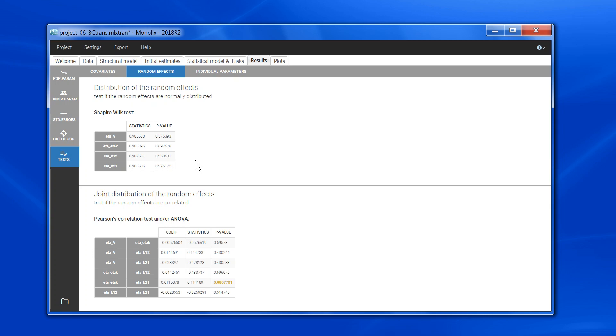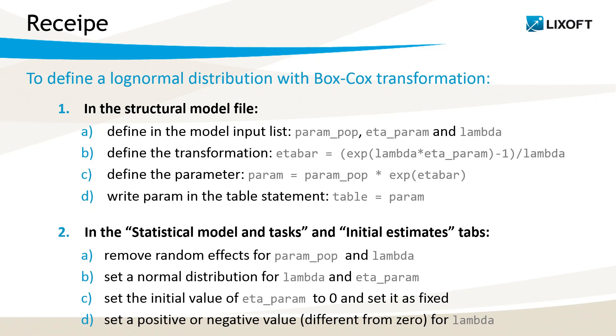So that's an example of how to implement a custom parameter distribution, by separating the fixed effect from the random effect. This separation makes Monolix a bit less efficient, in terms of speed and convergence, so do it only if necessary, and choose the initial values carefully.